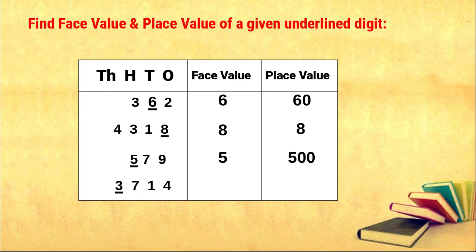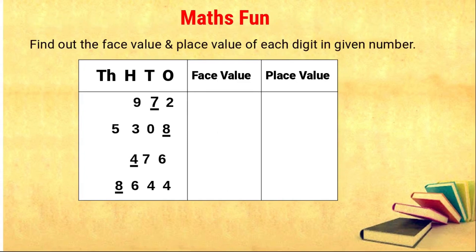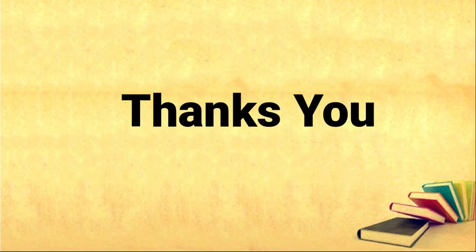Next, the given number is three thousand seven hundred and fourteen, and the underlined digit is three, which lies in the thousands place. So the face value is three, and the place value is three times one thousand, that is three thousand. Okay children, here they have given some sums — you do them at home. I hope you have understood this concept. Thank you.